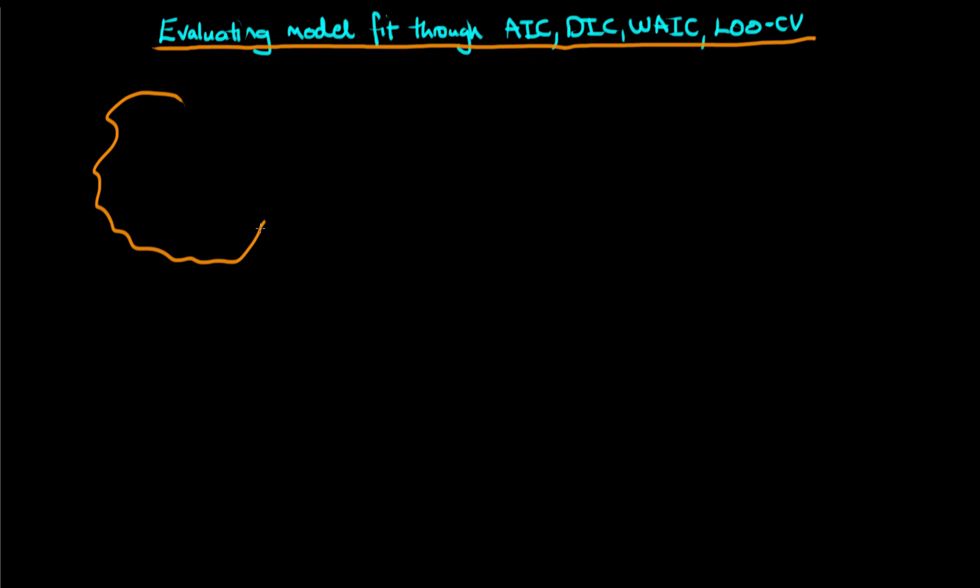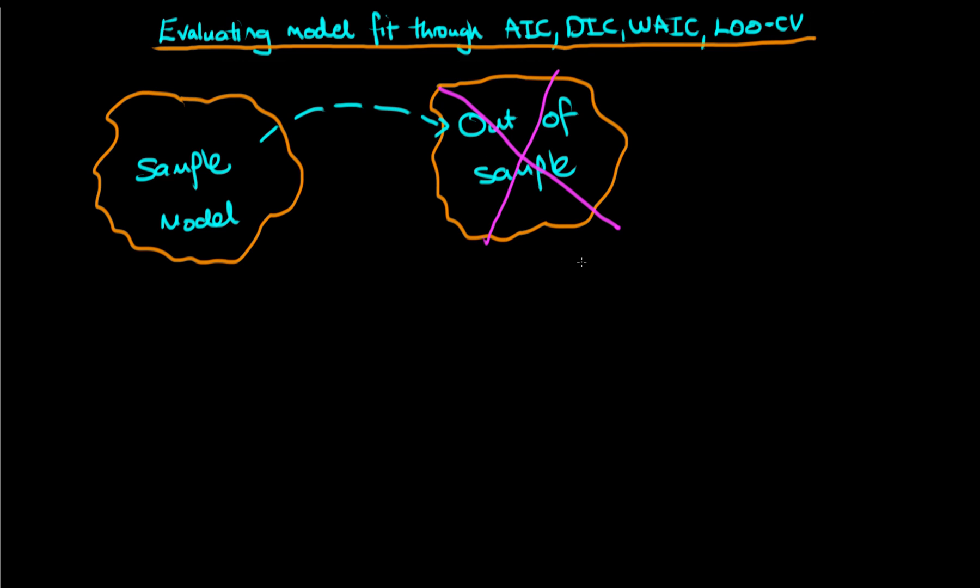The idea common to all of these criteria is that we have a sample of data and we use that sample to fit our model. However, what we would like to do is know how well our model generalizes to out-of-sample prediction. Ideally we would fit our model using one sample of data and then evaluate its predictive fit on another set of data. However, in real life data can be hard to come by, and so we don't necessarily have an independent data set on which to evaluate the fit of our model.